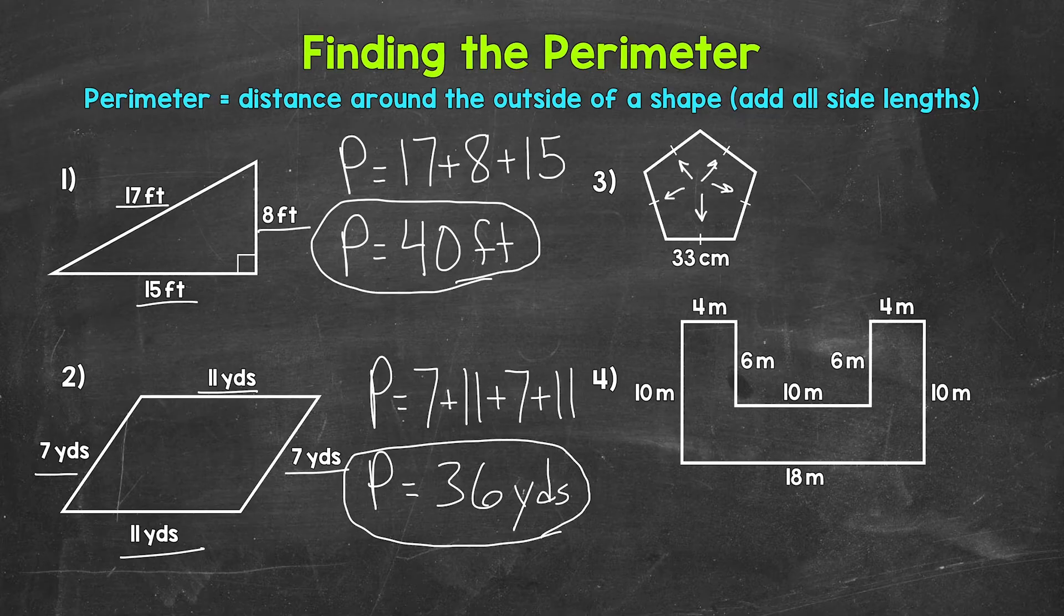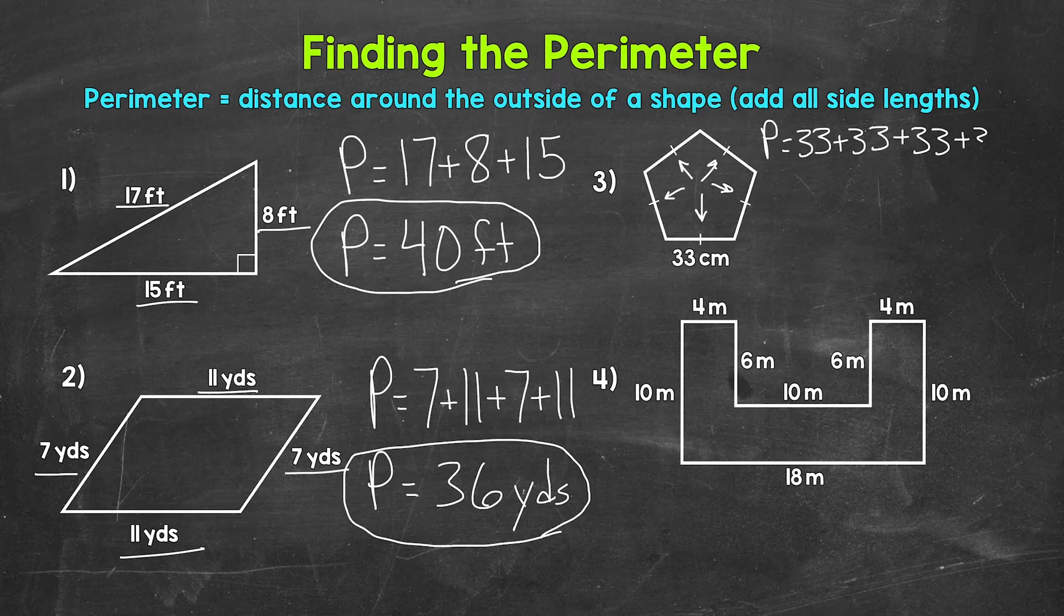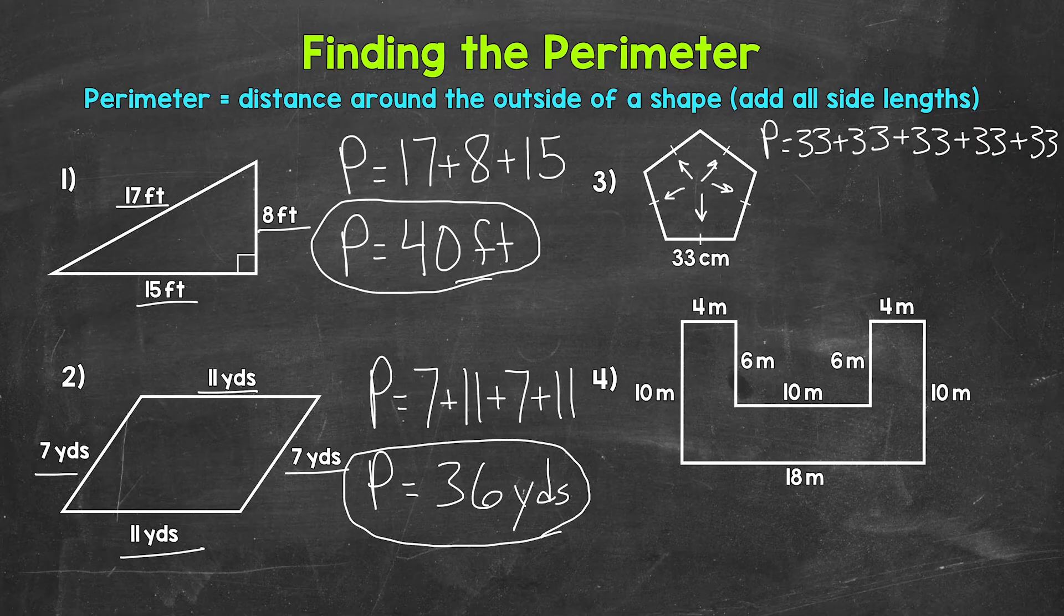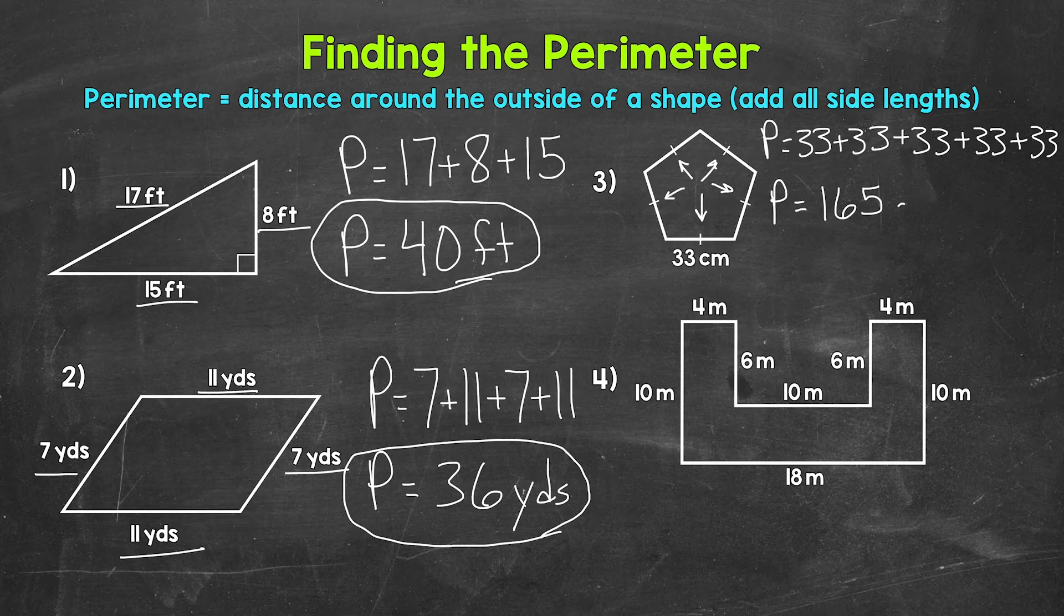So for the perimeter, we need to do 33 centimeters plus 33 centimeters plus 33 centimeters plus 33 centimeters plus 33 centimeters. Or since all of the sides are the same length, we can do 33 times 5. Either way, we will get the correct perimeter. 33 plus 33 is 66, plus 33 is 99, plus 33 is 132, plus 33 gives us a perimeter of 165 centimeters.